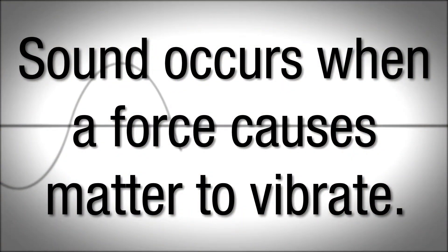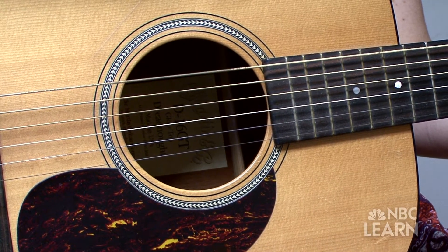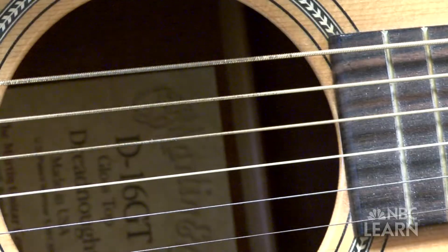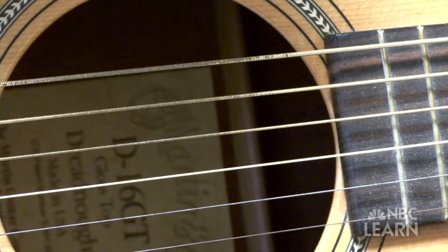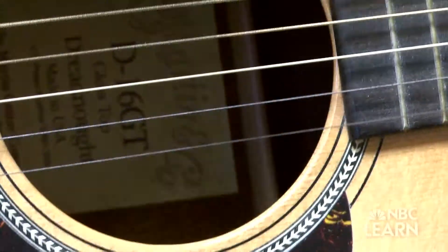Sound occurs when a force causes matter to vibrate. An example of this is plucking the string on a guitar. When you pluck the guitar string, it vibrates. The vibration of the string moves through matter and produces a sound.